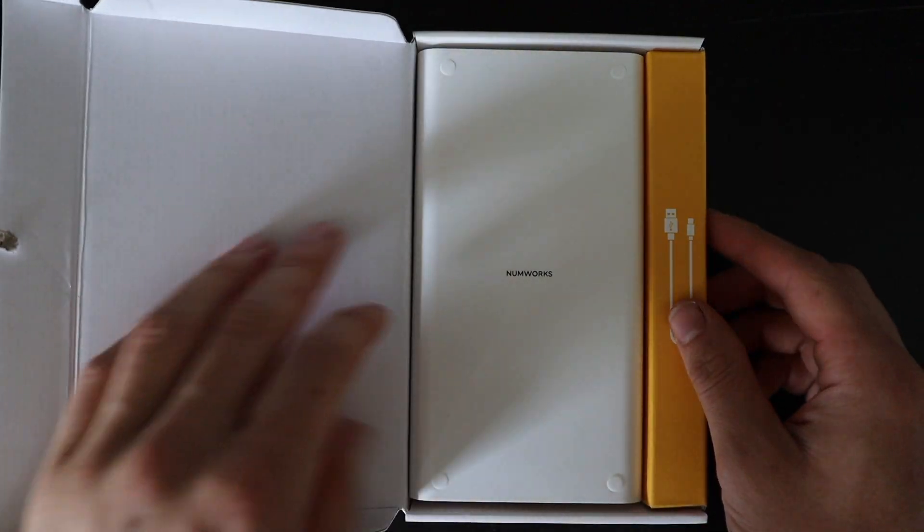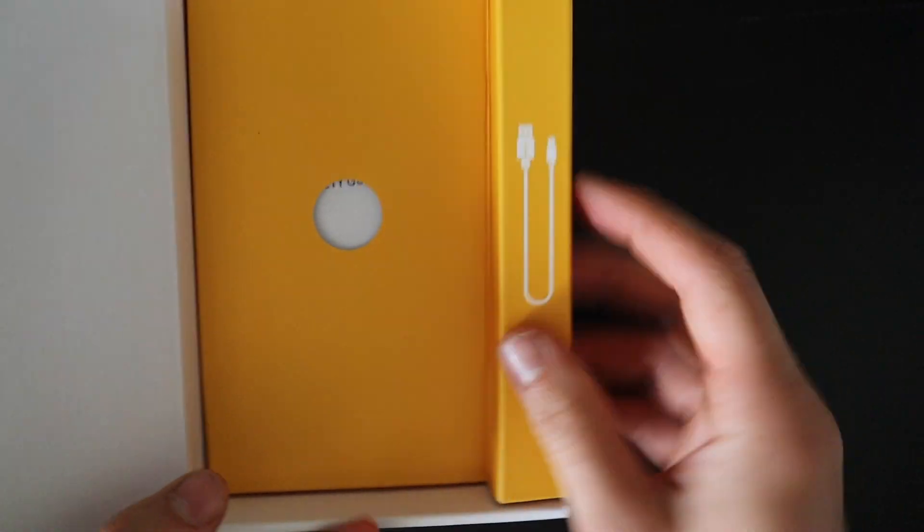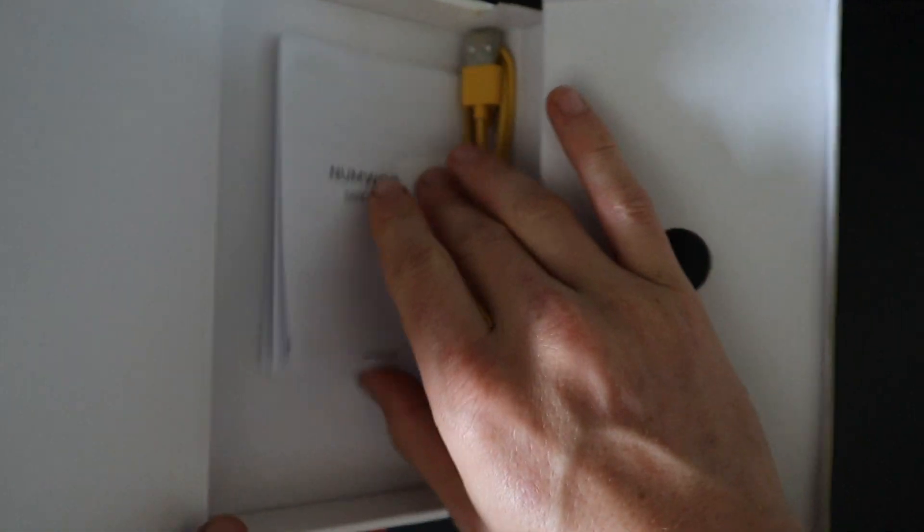And there we have it. It's a very simple box with the calculator in here, and then you get a charging cable included. Below that is a very small amount of paperwork and a sticker.